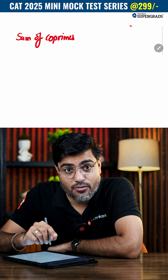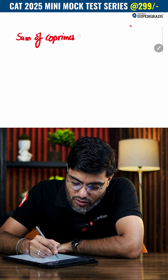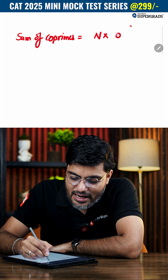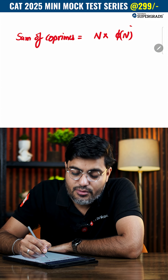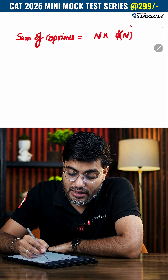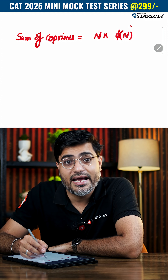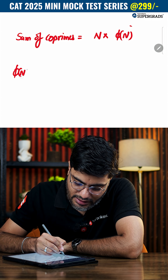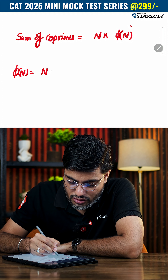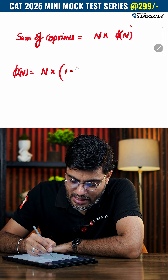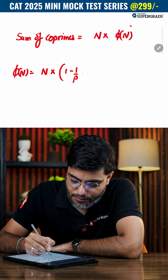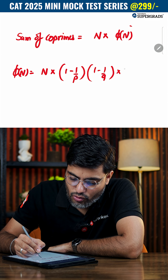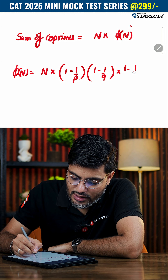The sum of all co-primes to a number and smaller than that number equals the number multiplied by φ(n), divided by 2. φ(n) is the Euler's totient number, and the formula is: φ(n) = n × (1 − 1/p) × (1 − 1/q) × (1 − 1/r).